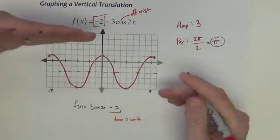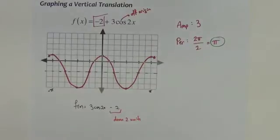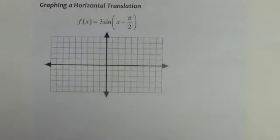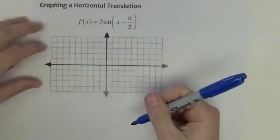Same graph, it's just slid down is all. Slid down two units. Okay, next let's look at a graph that's got a horizontal translation.